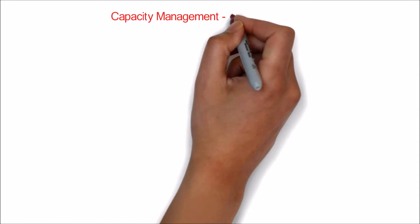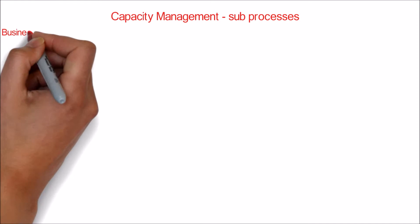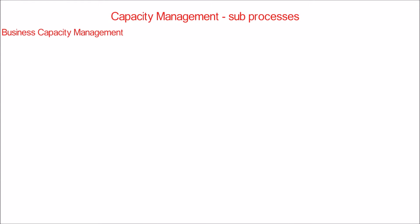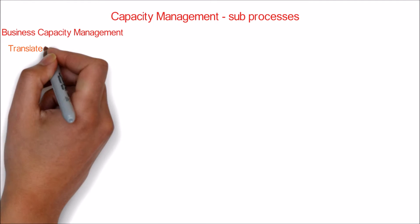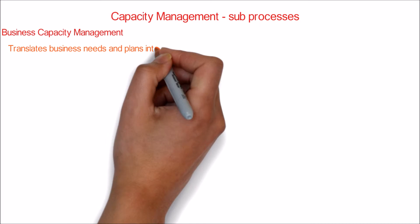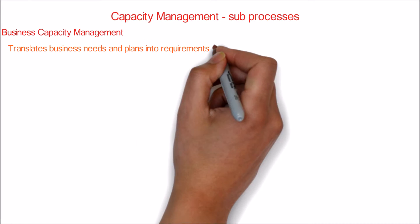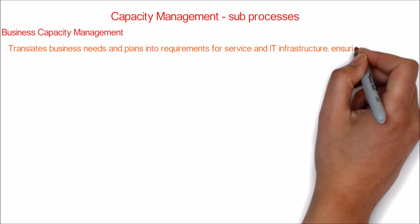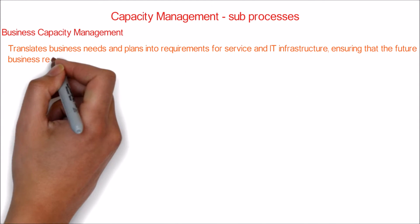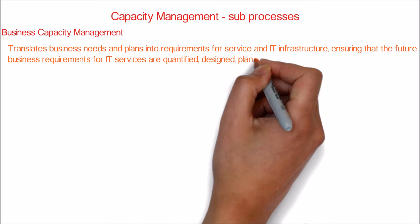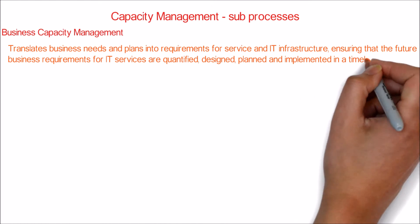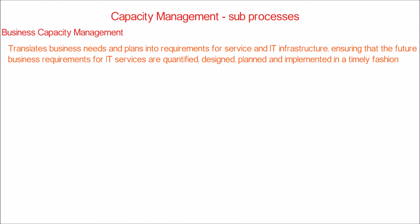Now we will look into the sub-processes of capacity management. Business Capacity Management translates business needs and plans into requirements for service and IT infrastructure, ensuring that the future business requirements for IT services are quantified, designed, planned and implemented in a timely fashion.